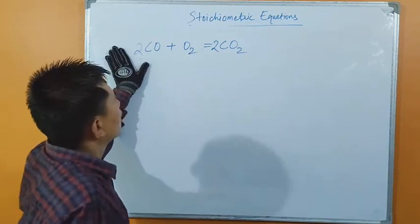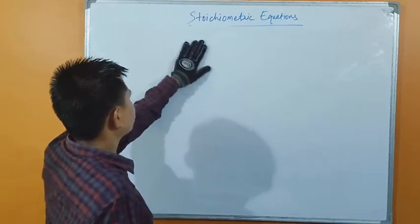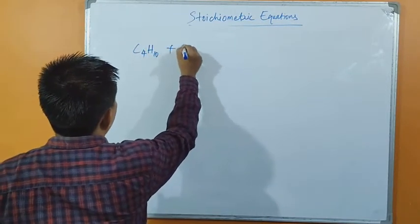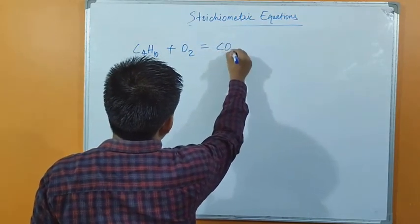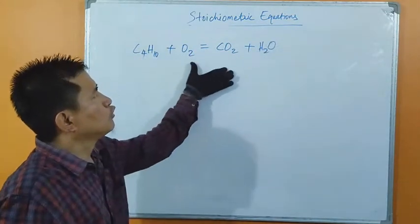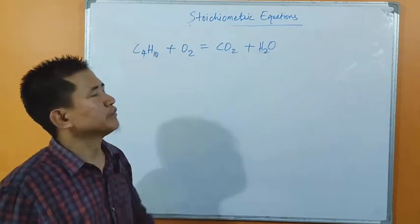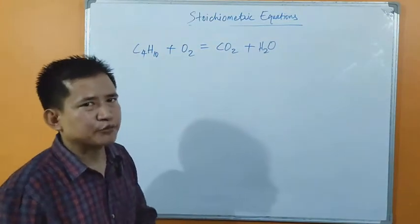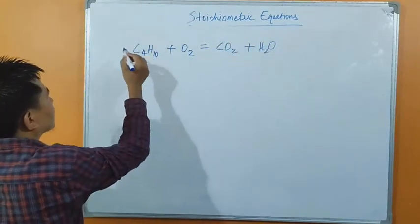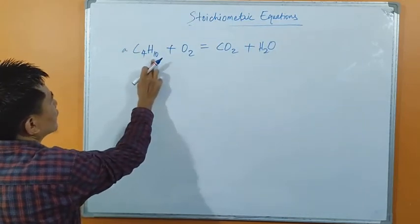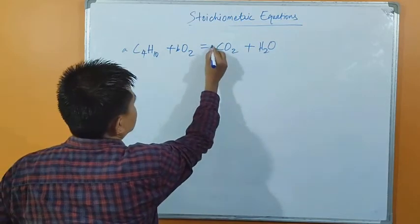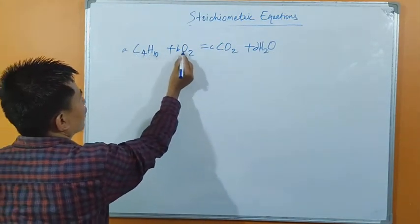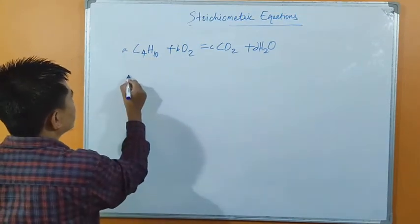If the equation is more complex — for example, butane C₄H₁₀ burns in oxygen to produce carbon dioxide and water — it is a little tougher to balance. To balance this type of chemical reaction, we need to follow simple steps. First, write A in front of C₄H₁₀, write B in front of O₂, write C in front of CO₂, and write D in front of H₂O.